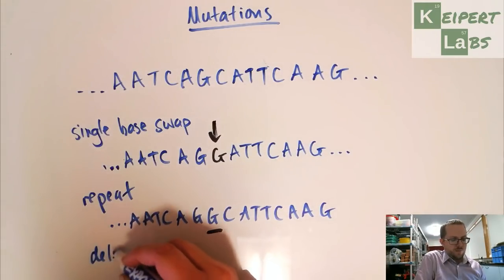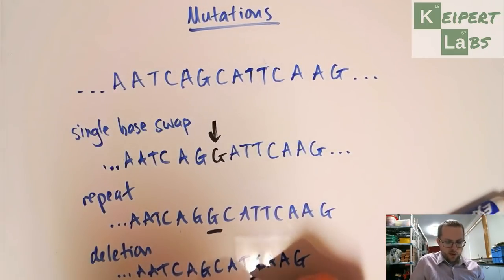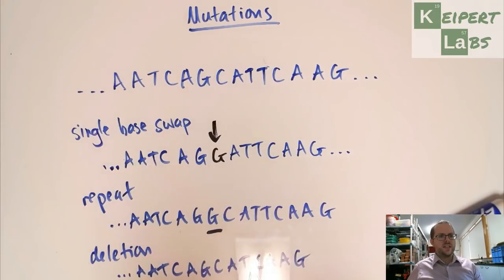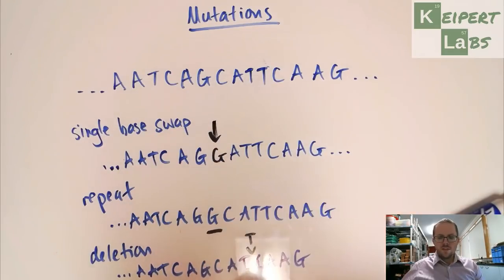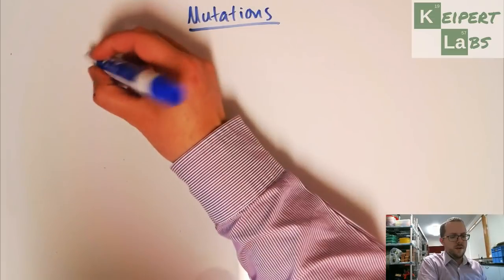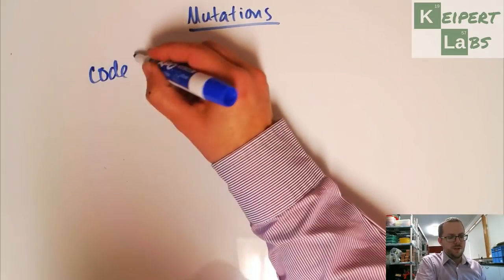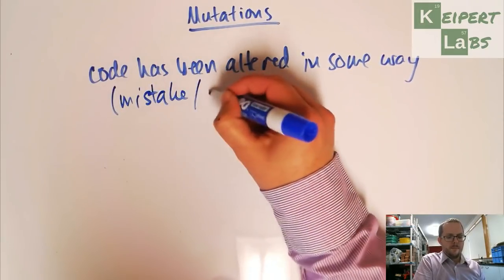Or we can have what's called a deletion. So here, in this spot here, there is a T that's missing. Here we had a base of T that was chopped out. So it's been deleted. So the idea is that in each of these situations that the code has been changed. So the code has been altered in some way. So it's like a mistake or a glitch in the code.